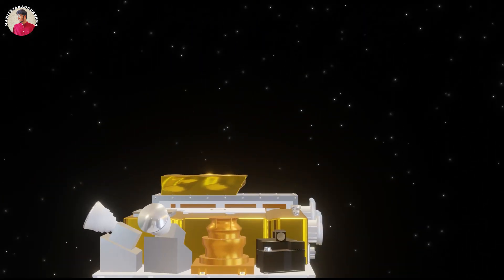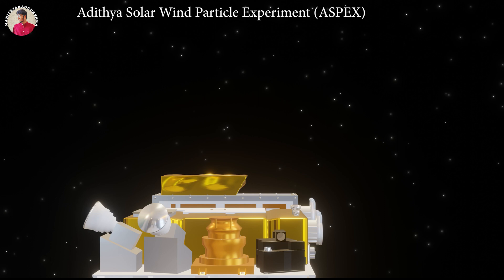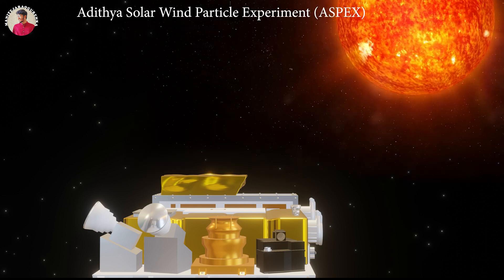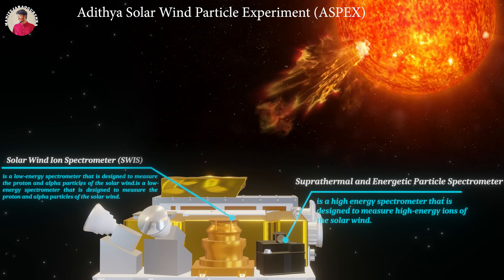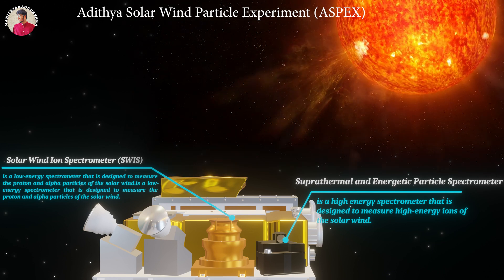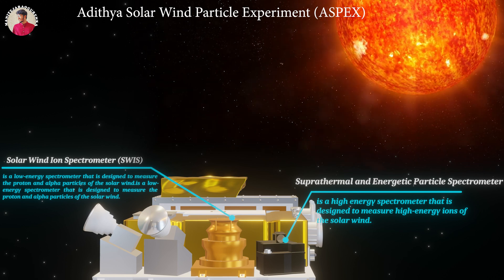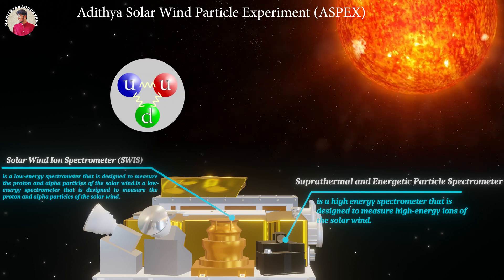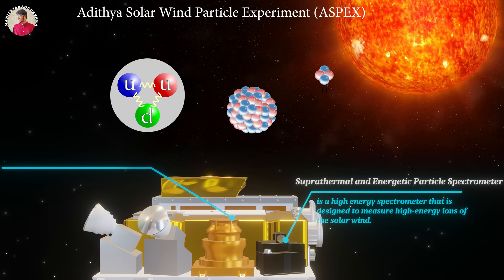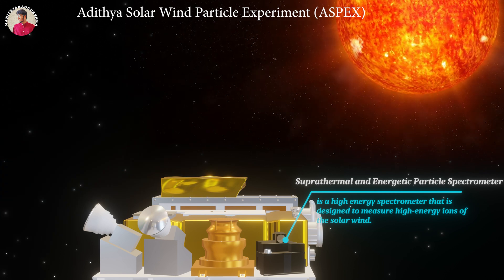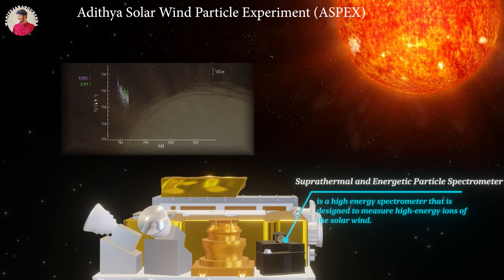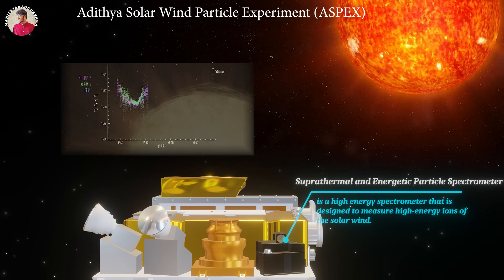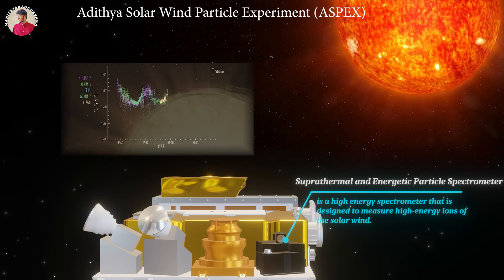Third, the Aditya Solar Wind Particle Experiment ASPEX payload comprises two subsystems, SWISS and STEPPS. SWISS, also known as Solar Wind Ion Spectrometer, is a low-energy spectrometer that is designed to measure the proton and alpha particles of the solar wind. And STEPPS, Suprathermal and Energetic Particle Spectrometer, is a high-energy spectrometer that is designed to measure high-energy ions of the solar wind.